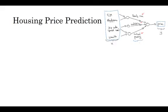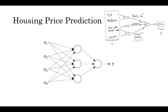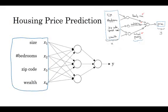So what you actually implement is this, where here you have a neural network with four inputs. So the input features might be the size, number of bedrooms, the zip code or postal code, and the wealth of the neighborhood. And so given these input features, the job of the neural network will be to predict the price Y. And notice also that each of these circles, these are called hidden units in the neural network, that each of them takes as inputs all four input features.